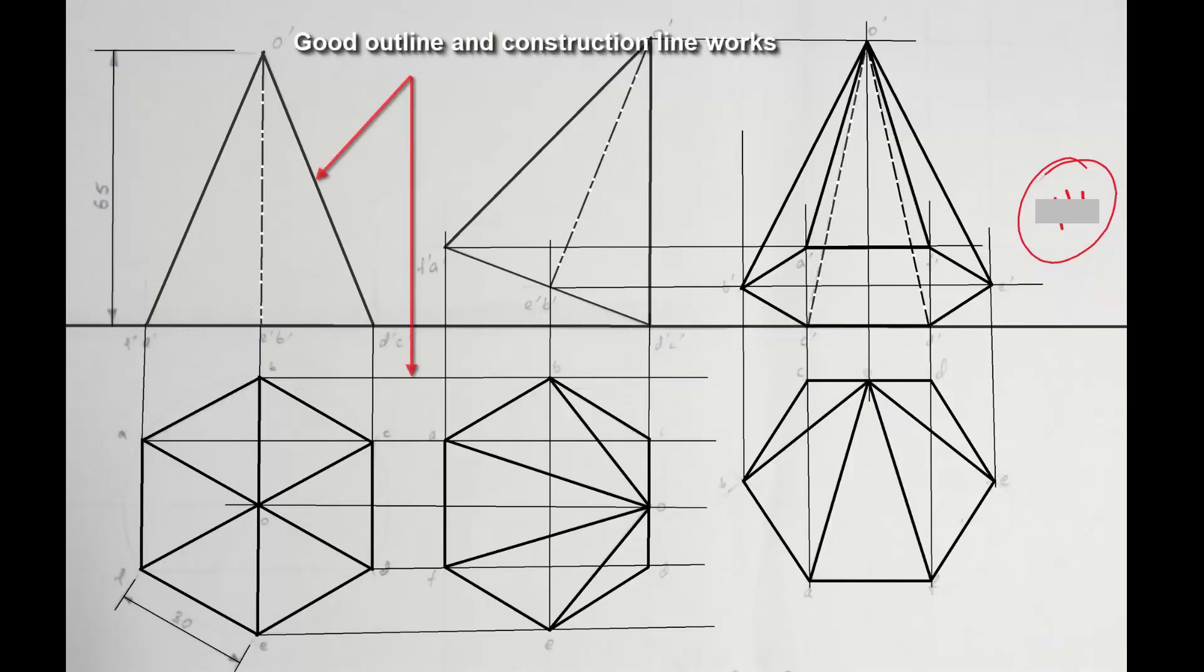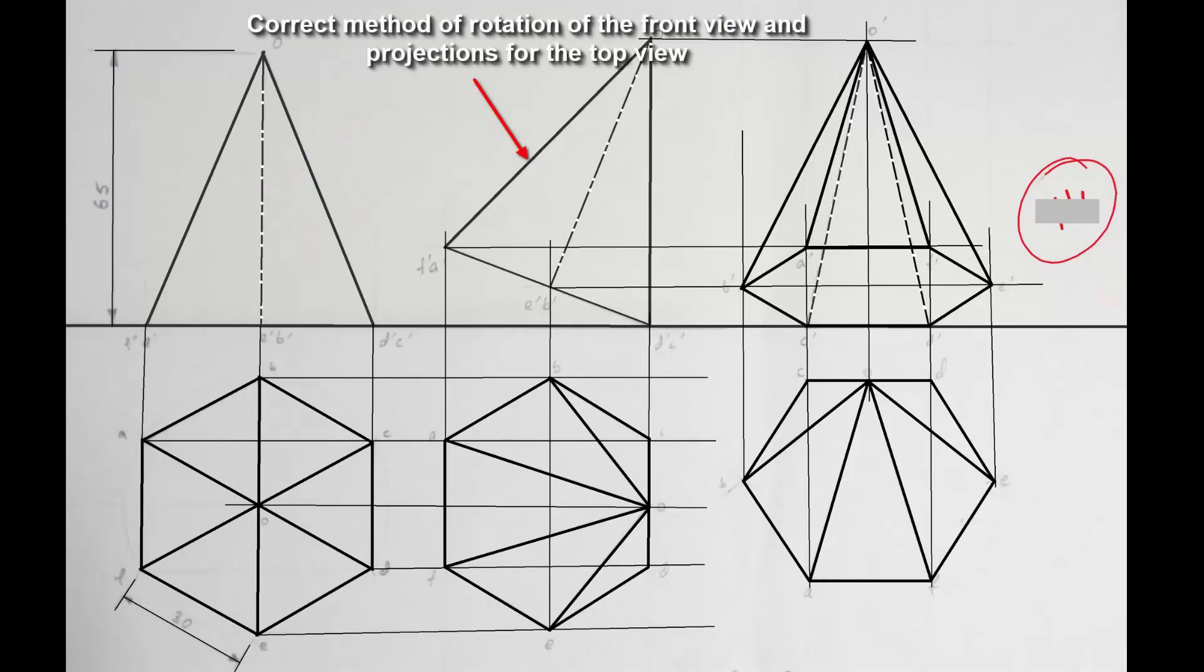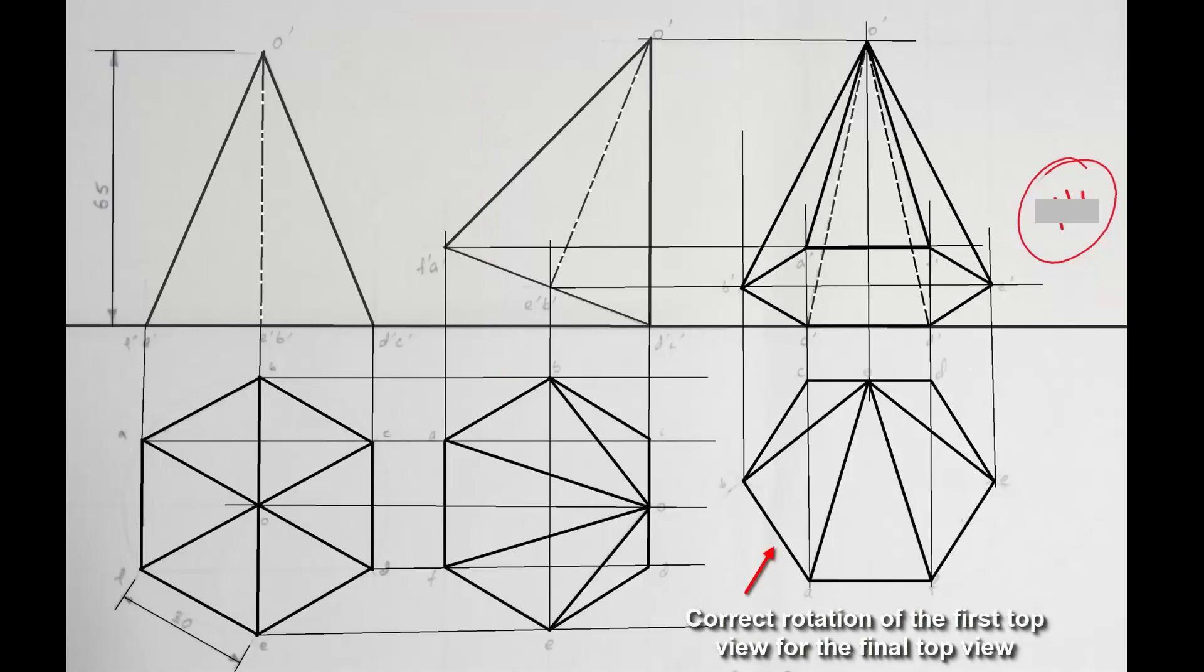Orthographic projections of a regular hexagonal pyramid by rotation method. Good outline and construction line works. Center lines have been drawn. Correct method of rotation of the front view and projections for the top view has been used.